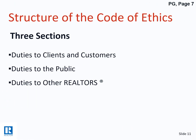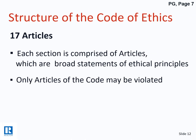The Code of Ethics is made up of 17 articles, broken into three categories. Category one — Articles 1 through 9 — covers duties to clients and customers. Category two — Articles 10 through 14 — covers duties to the public. Category three — Articles 15 through 17 — covers duties to other Realtors. You can only be found in violation of an article of the Code, and each article is a broad statement of an ethical principle. NAR has put together a synopsis that makes each article very clear.